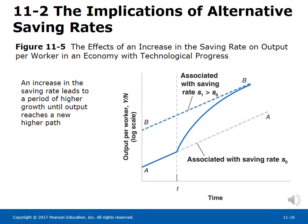Figure 11-5 uses a logarithmic scale to measure output per worker, so constant growth appears as a straight line with slope equal to the growth rate. At initial saving rate S0, the economy moves along path AA. If at time t the saving rate increases to S1, the economy experiences higher growth for some time until it reaches its new higher path BB. On path BB, the growth rate is again the same as before the increase — that is, the slope of BB equals the slope of AA.